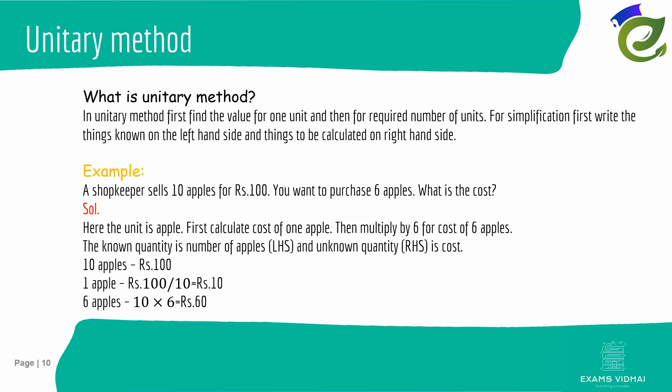Now let's look at the unitary method. Like in proportion, you will have two related quantities. The technique is to first find the value for one unit and then multiply to calculate for the required number of units. For clarity, write known quantities on the left-hand side and the quantity to be calculated on the right-hand side.